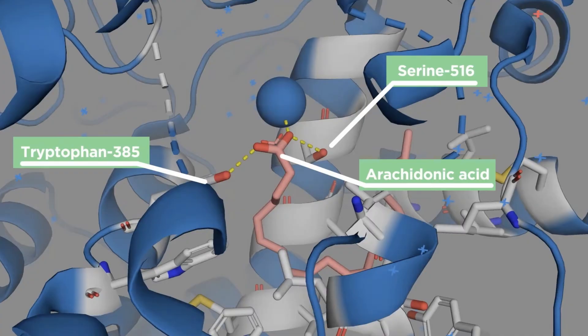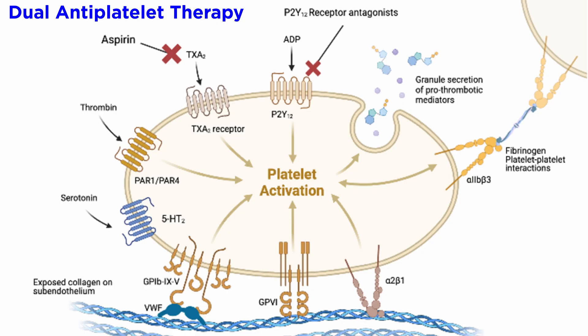Check the tutorial on aspirin for more information on this mechanism. When less thromboxane A2 is produced through COX inhibition, this reduces activation of the thromboxane receptor due to less agonist being present, hence the term antithrombotic.